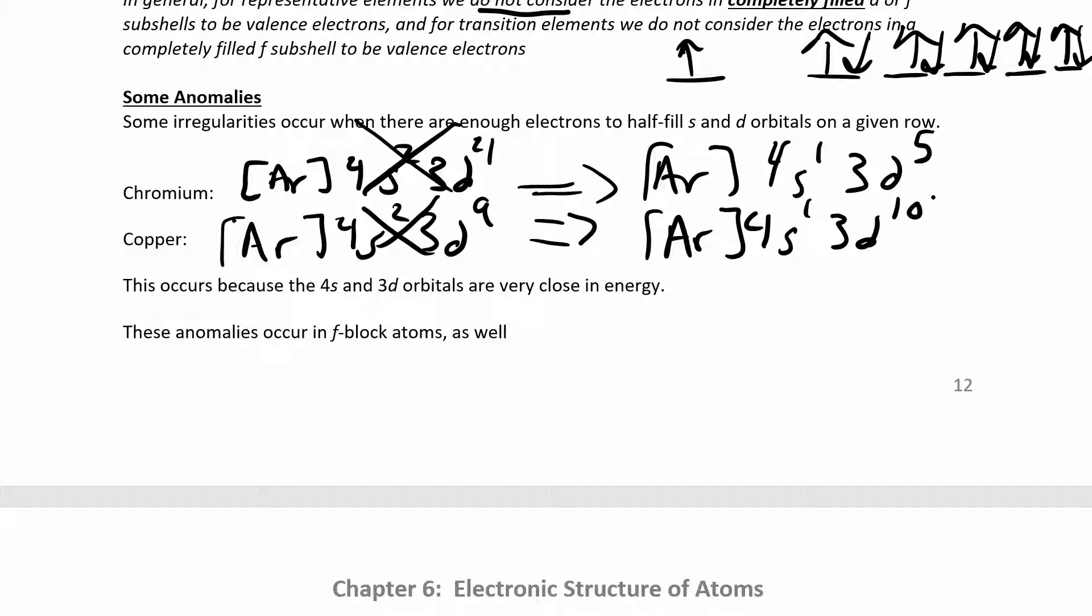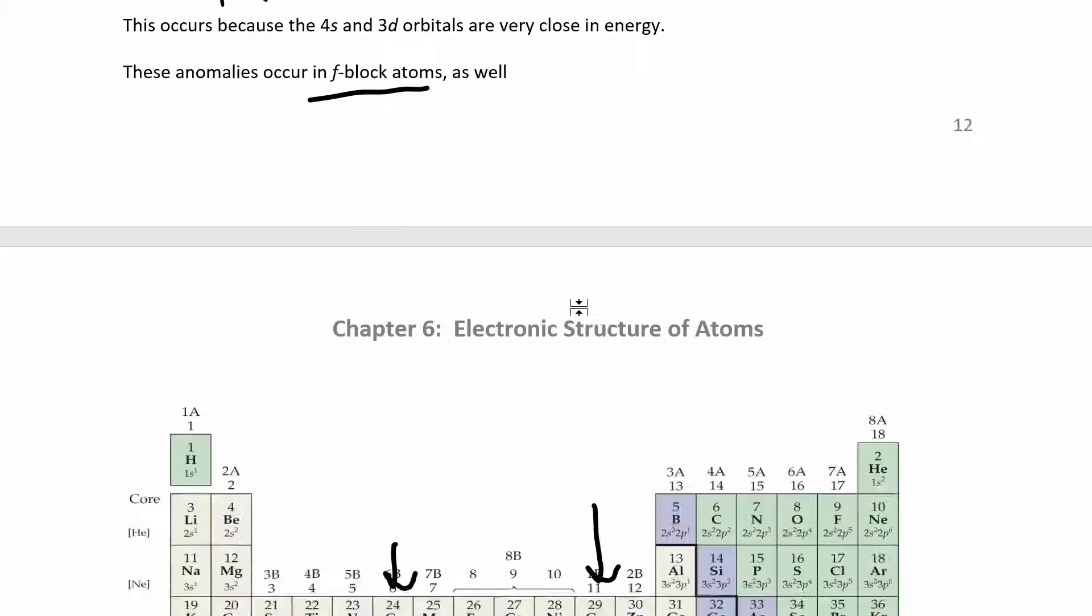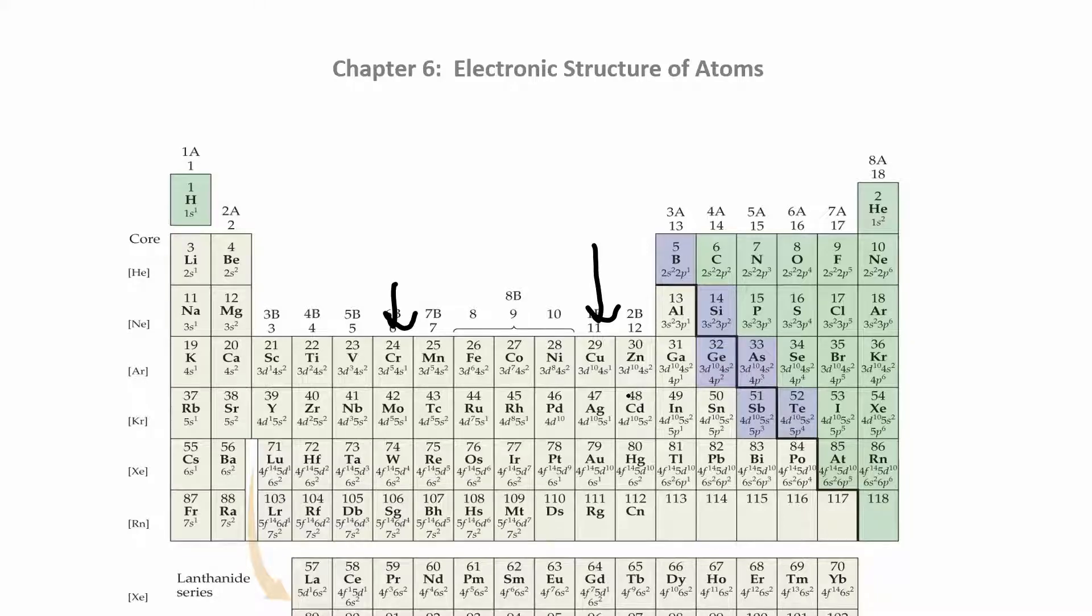So when it's more favorable for you to have a half filled, if you can get a half filled D or a full D block, then you get these anomalies happening here. Lots of anomalies happening in the F block. So we're not even going to go there, but if you want to see, so the same thing happens here for copper and for silver and for gold, and then for chromium and molybdenum kind of sorts itself out over here for tungsten. But so these two rows, two columns are the ones where you'll see some anomalies.